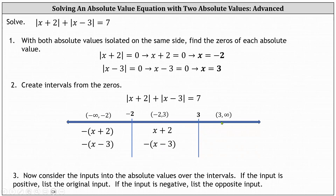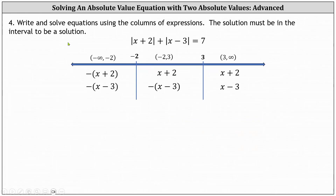Finally, on the right, when x is greater than three — on the open interval from three to infinity — both x plus two and x minus three are positive. Therefore, we list the original inputs of x plus two and x minus three. For our final fourth step, we now write and solve equations using the columns of expressions. However, the solution must be in the given interval to be a valid solution to the original equation.